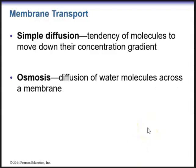The plasma membrane is important for transport of molecules. The first type of membrane transport is simple diffusion — the tendency of molecules to move down their concentration gradient from an area of high concentration to an area of low concentration. We then have osmosis: whenever you hear osmosis, think water. Osmosis is the diffusion of water molecules across a membrane. Note that simple diffusion and osmosis do not require energy.